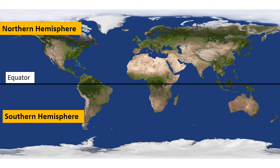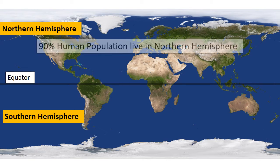The second difference is human population. Because of the huge land mass of the Northern Hemisphere, it is already clear that more humans live there compared to the Southern Hemisphere. Around 90% of the total population lives in the Northern Hemisphere, while the rest live in the Southern part.